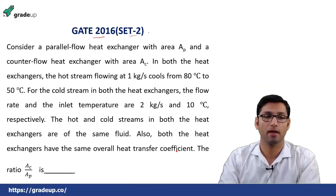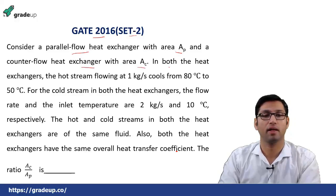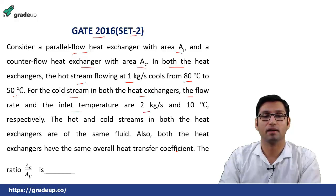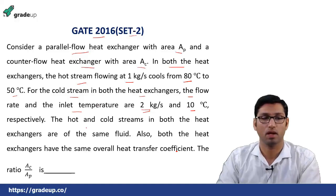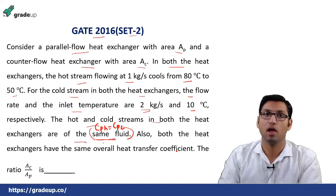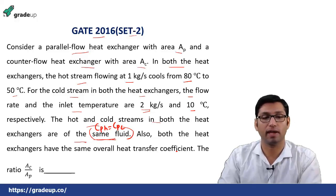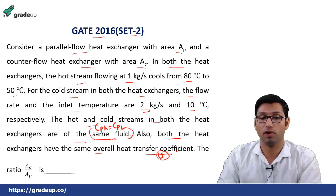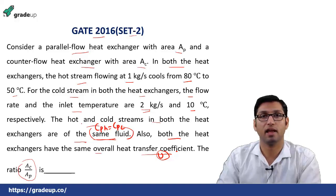Next question from GATE 2016, Set 2. A parallel-flow heat exchanger with area A_P and a counter-flow heat exchanger with area A_C are given. In both, the hot stream flows at 1 kg/s, cooled from 80°C to 50°C. Cold stream flows at 2 kg/s, entering at 10°C. Hot and cold streams are the same fluid so Cp_H = Cp_C. Both heat exchangers have the same overall heat transfer coefficient U.